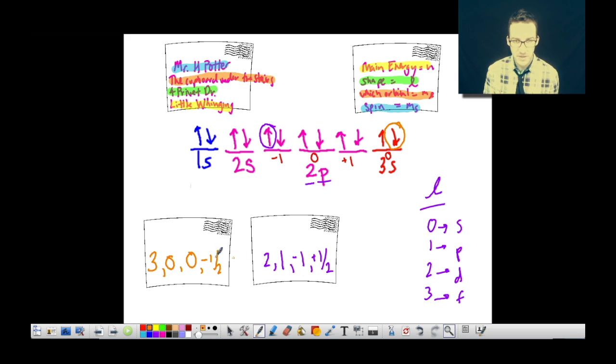So our orientation value is also going to be zero. Note though, it's the second arrow in that orbital, so it's going to be the negative one-half spin. And think about these two addresses. It's sort of like saying this one's going to Little Whinging, but this one's going to a completely different town. This one's going to Edinburgh. So we're talking different towns, different energy levels here. This one's going to the second. This one's going to the third. So completely different towns.